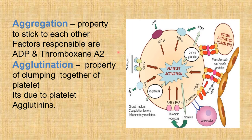The next property is aggregation — the property to stick to each other. Factors responsible are ADP and thromboxane A2. First there is adhesion of platelets to the endothelium, then aggregation. Agglutination is the property of clumping together of platelets. Adhesion is sticking of a platelet to the endothelium; aggregation is sticking of platelets to one another; agglutination is clumping together in a group formation, due to platelet agglutinins.